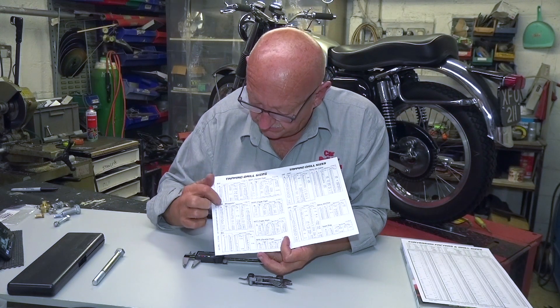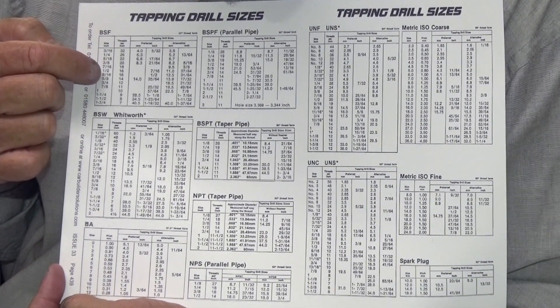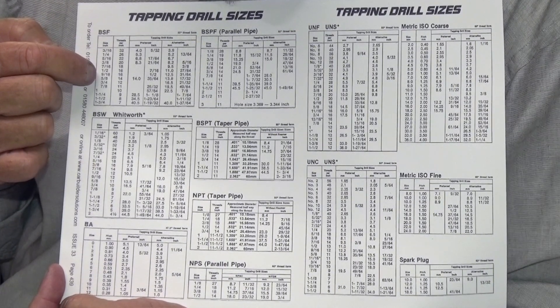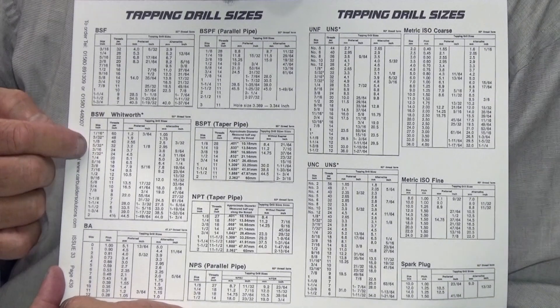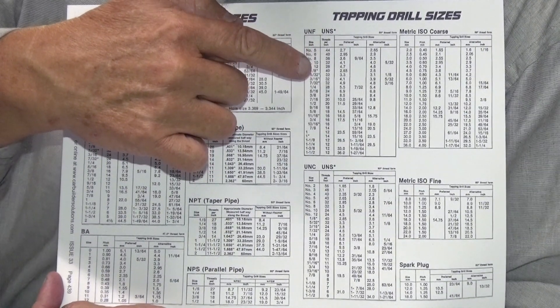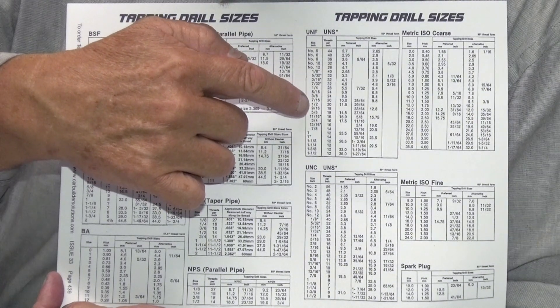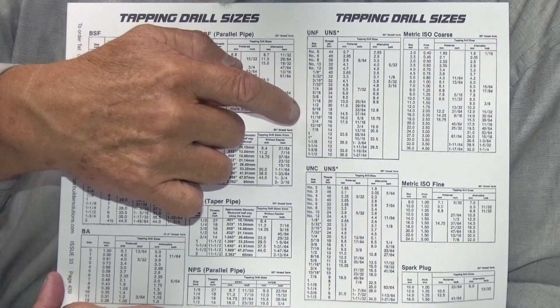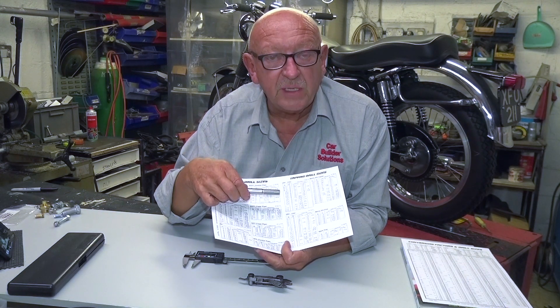So we've got two figures: a 20 TPI thread and a diameter of half an inch. We look on our chart — down the BSF threads per inch column, 20 TPI gives 3/8 of an inch, which it's not. Down to Whitworth, 20 TPI there is a quarter-inch thread — not that either. Looking across at the UNF sizes, going down to 20 TPI we see there are two threads with 20 TPI: 7/16ths and half-inch. We know it's not 7/16ths — it's half-inch. So the thread is half-inch UNF.